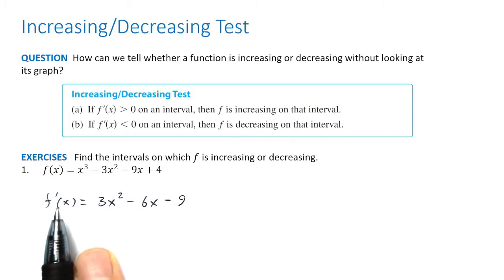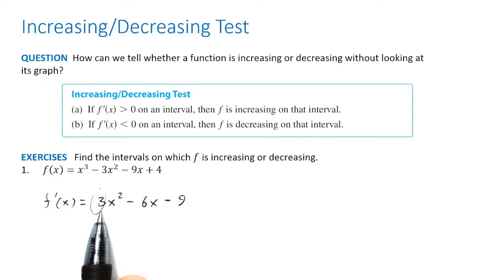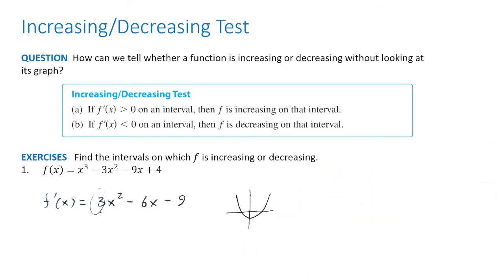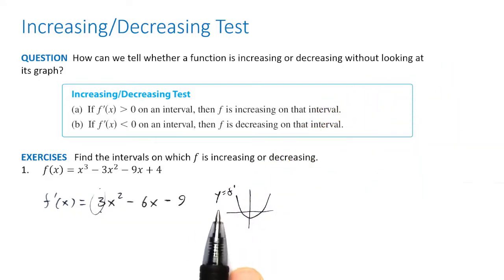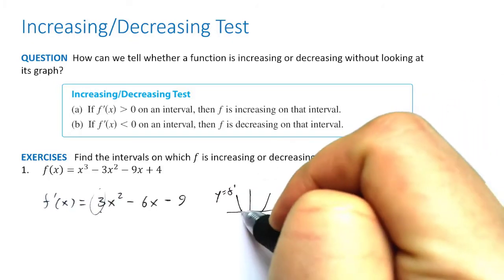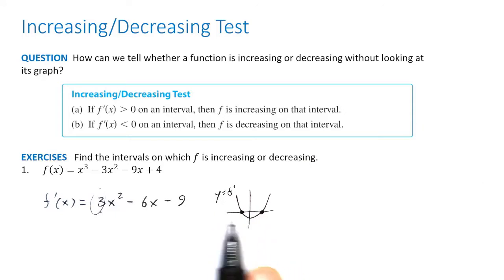We want to know where f prime is positive or negative. This is a second-degree polynomial, so we know its graph is a parabola. Moreover, the leading coefficient is positive, so it opens upwards. Its graph will look something like a U-shape. So f prime is positive on the outer regions and negative in the middle. The trick to finding where any function is positive or negative is to locate the zeros — the points where it equals zero — which divide the regions.